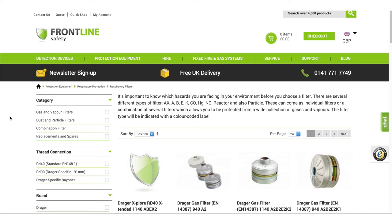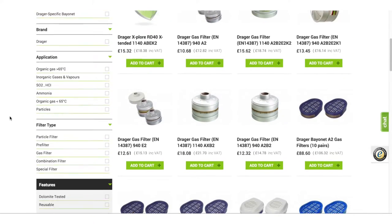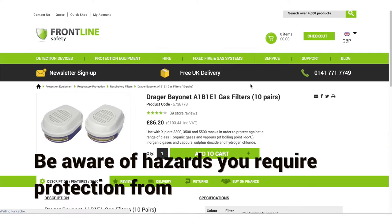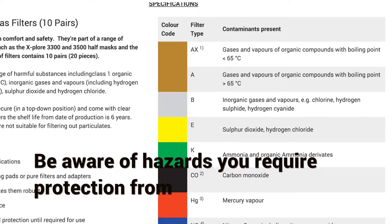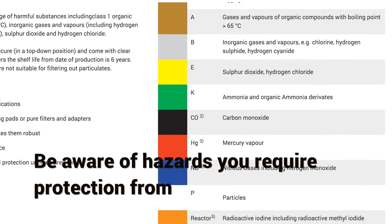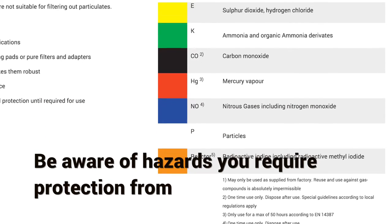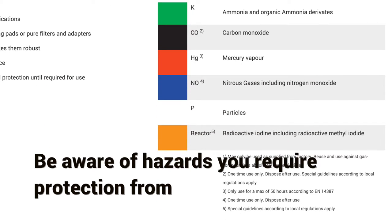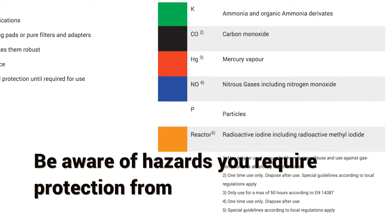The filters we have on our website cover hundreds of different contaminants, but you need to be sure of the concentration of the gases, vapours, or particles in the air. Find out the maximum permissible concentration of gases through nominal protection factors and OELs.